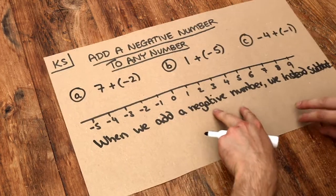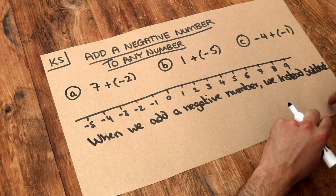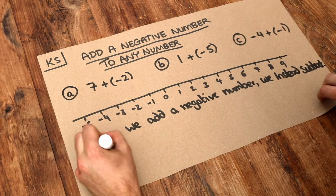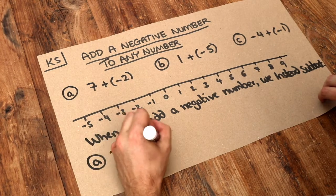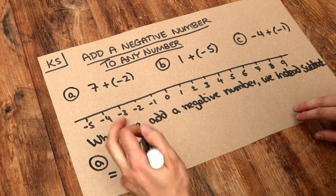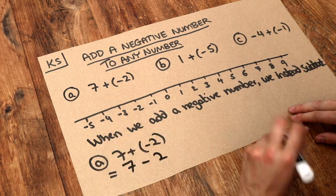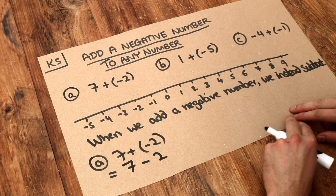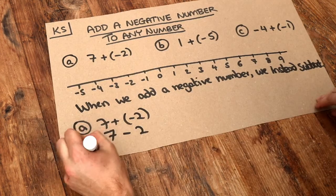So let's use that on these examples. We've got 7 plus negative 2. As per my instructions, when we add negative 2, we end up instead subtracting. So we do 7 minus 2, but without the negative on it. And clearly, 7 minus 2 is 5.